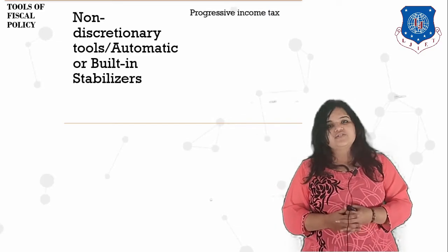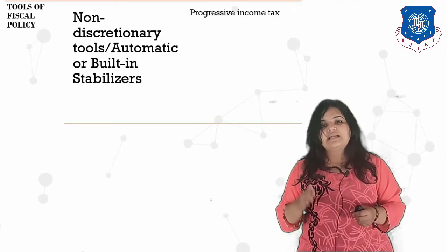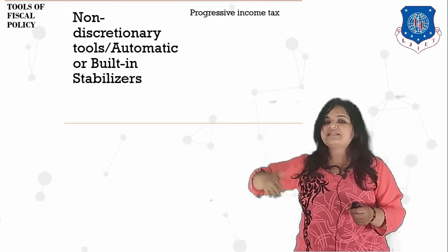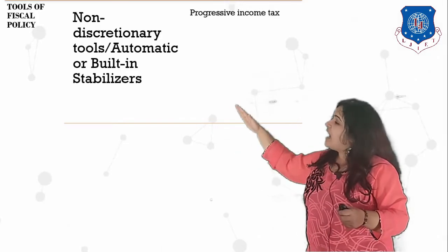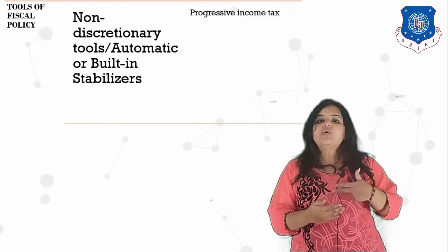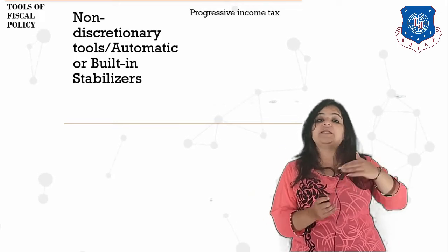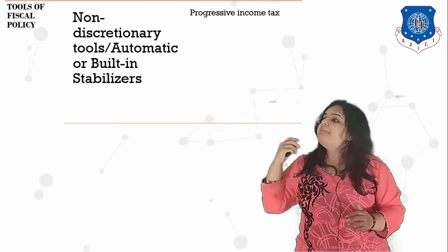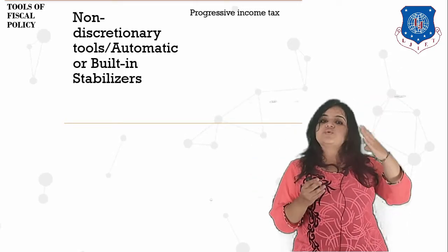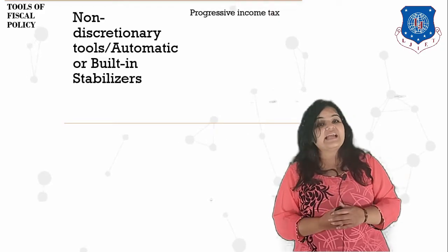The first non-discretionary tool is progressive income tax. In India there is a progressive income tax where your tax increases as your salary increases. People with higher income pay higher taxes, leaving them with less money and reducing their contribution to inflation. People with lower income do not pay taxes and can save and spend more money.